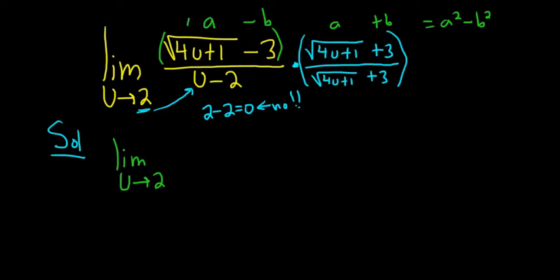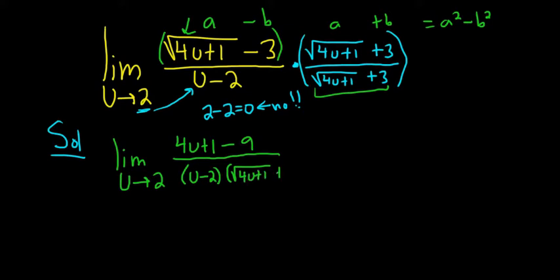So when you square your square root, it goes away. So you get 4u plus 1 minus 9. On the bottom, we still have u minus 2, and then we also have this piece. It's very easy to forget. So parentheses, square root 4u plus 1 plus 3.